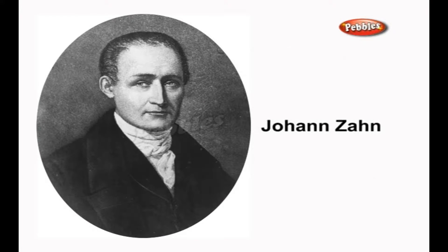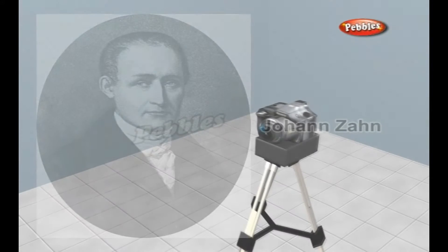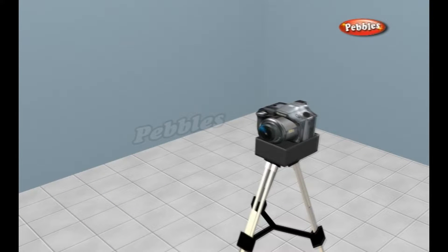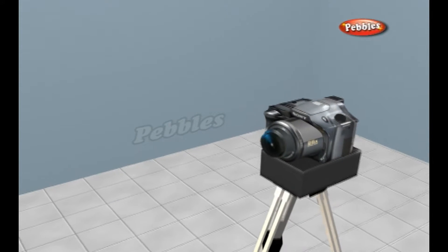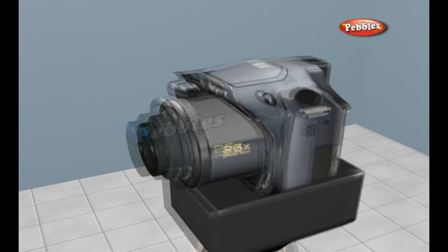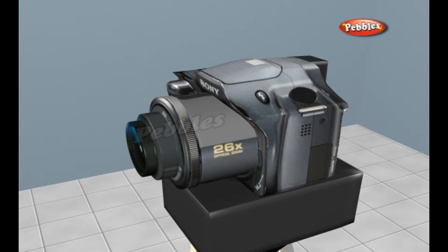The first camera that was small and portable enough to be practical for photography was built by Johann Zahn in 1685. The basic technology that makes all of this possible is fairly simple.